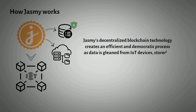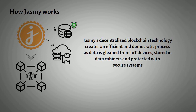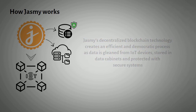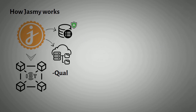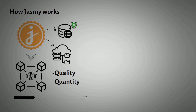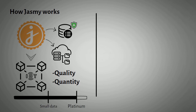As data is gleaned from IoT devices, it is stored in data cabinets and protected with secure systems. Jasmine sorts data according to its quality and quantity, with a scale ranging from small data — referring to individual data contained on devices — to platinum, or the most valuable data.